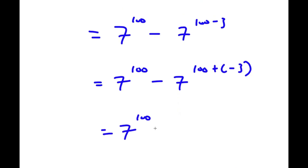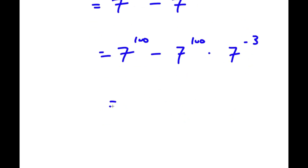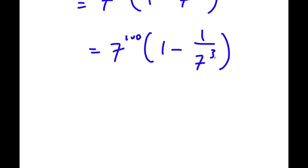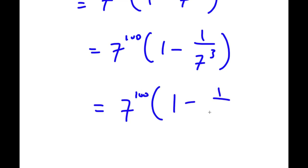This equals 7 to the power of 100 minus 7 to the power of 100 times 7 to the power of negative 3. Factoring out 7 to the power of 100, I get 7 to the power of 100 times 1 minus 7 to the power of negative 3. Since 7 to the power of negative 3 is 1 over 7 to the power of 3, and 7 to the power of 3 equals 343, I have 7 to the power of 100 times 1 minus 1 over 343.